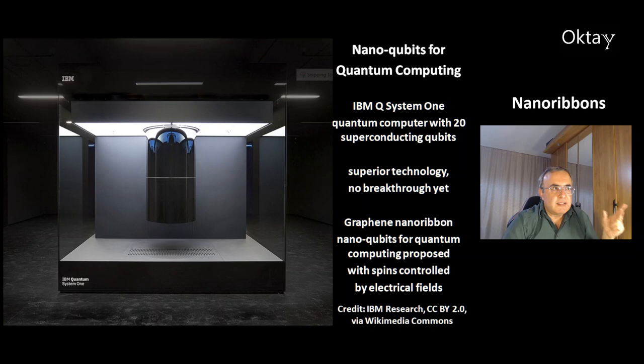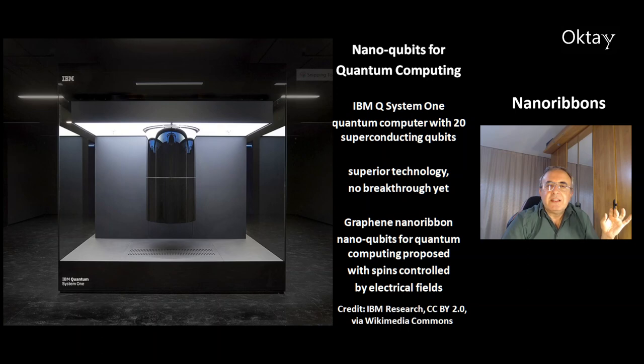This is another potential application for nanoribbons: nanocubits for quantum computing. This is a picture of the IBM Q-System One — a quantum computer with 20 superconducting qubits. The quantum computer has superior technology, but there is no real breakthrough yet. Nanoribbon nanocubits were proposed for quantum computing, with spins controlled by an electrical field.